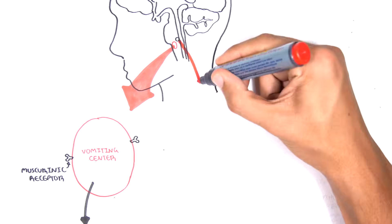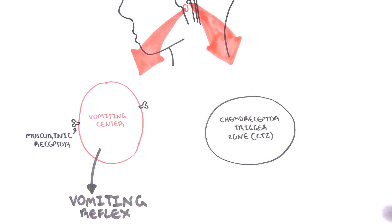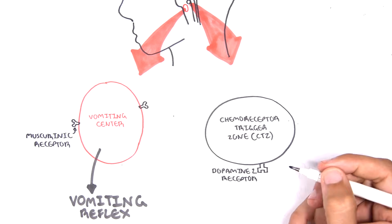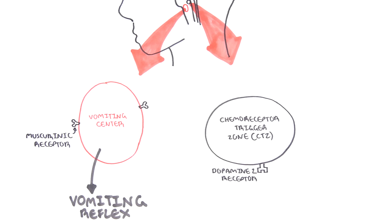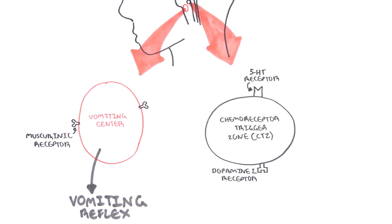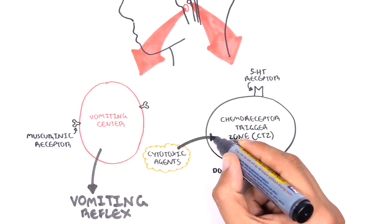Close to the vomiting center, also near the medulla oblongata of the brain stem, is another area called the chemoreceptor trigger zone, or CTZ for short. The CTZ, as the name suggests, gets triggered by chemicals, and it contains a few types of receptors: dopamine 2 receptors and 5-HT receptors. 5-HT essentially is serotonin. It's easy to remember CTZ because we know that chemotherapy stimulates this chemoreceptor trigger zone.